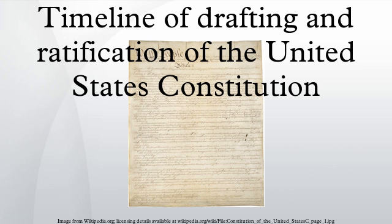September 8: The Committee of Style and Arrangement, composed of Alexander Hamilton, William Johnson, Rufus King, James Madison, and Gouverneur Morris, is selected to distill a final draft constitution from the 23 approved articles. September 12: The Committee of Style and Arrangement presents the completed final draft of the Constitution to the Convention for its consideration. The 23 articles have been reorganized into a cohesive document containing seven articles, a preamble, and a closing endorsement, of which Gouverneur Morris was the primary author.